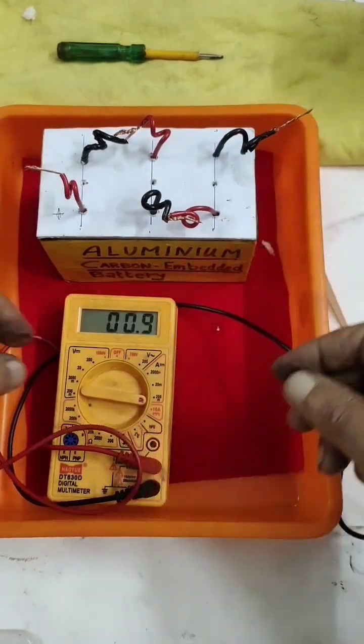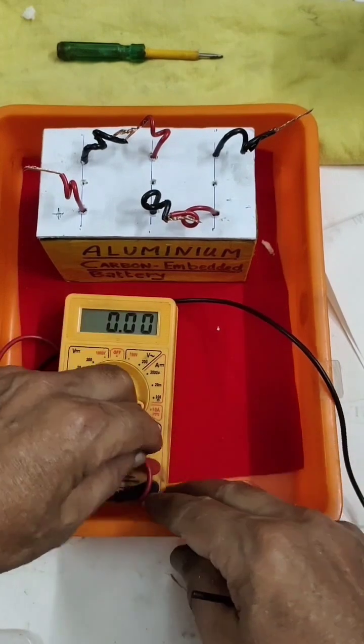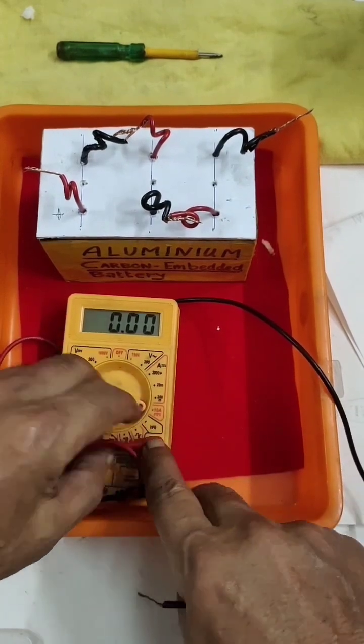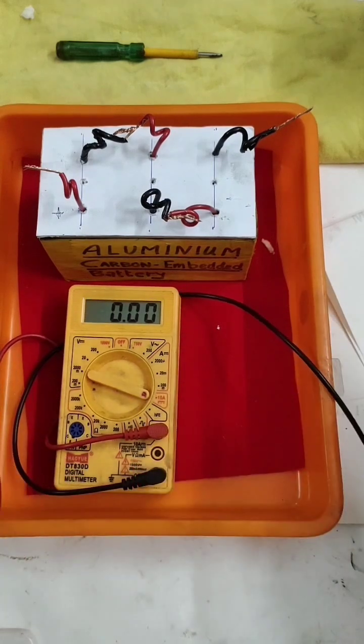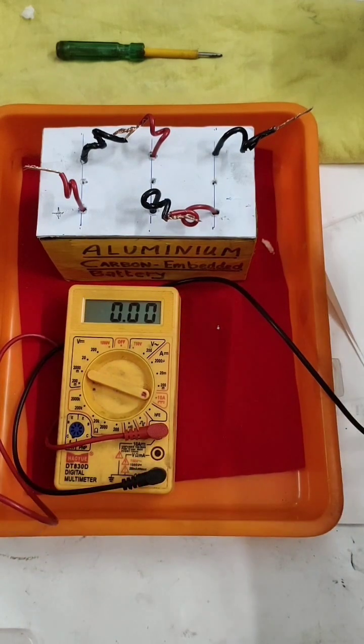About 200. So we shall put in 10 amps and see. This is before charging I am saying. This is carbon embedded. So we cannot expect immediate voltage and current.